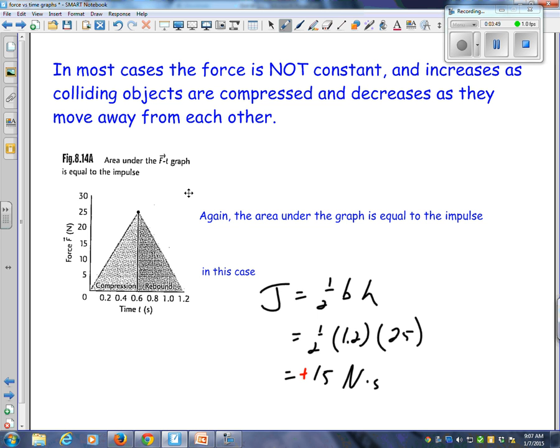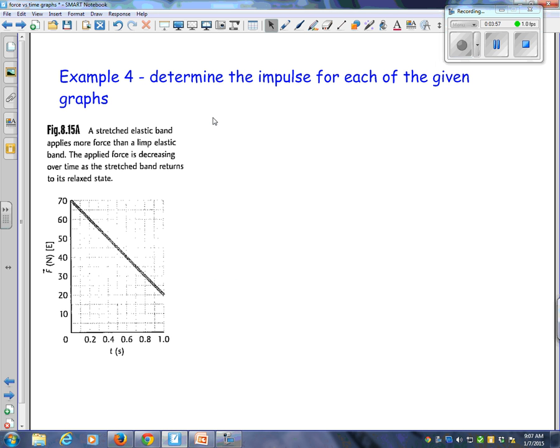Some questions? Are we all good there? So here's example number four. Determine the impulse for each of the given graphs. If you want to flip the page in the book, we're now on page 284. Here we have a stretched elastic band. It applies more force than a limp elastic band. The applied force is decreasing over time as the stretched band returns to its relaxed state.